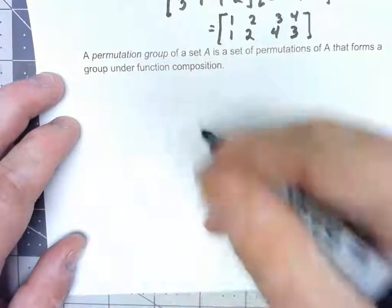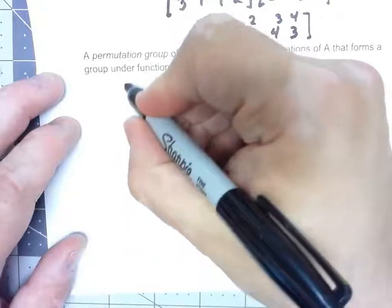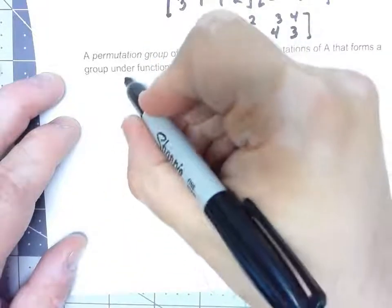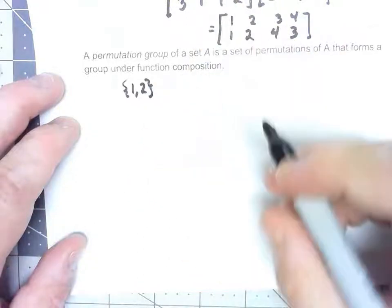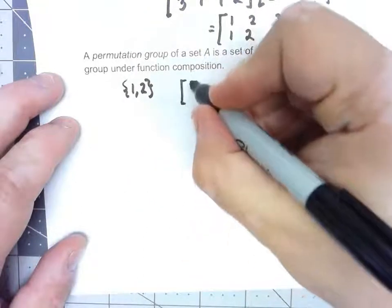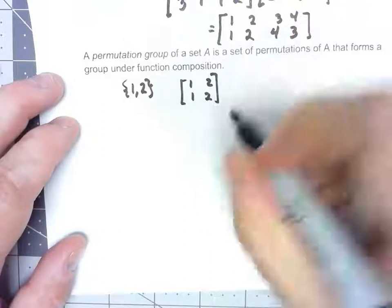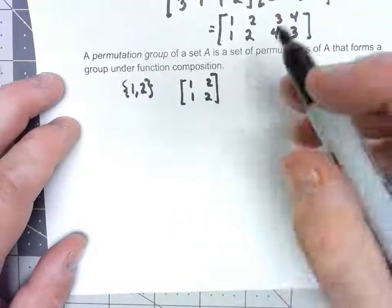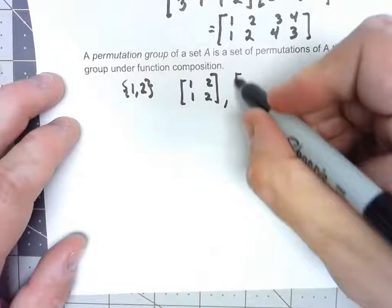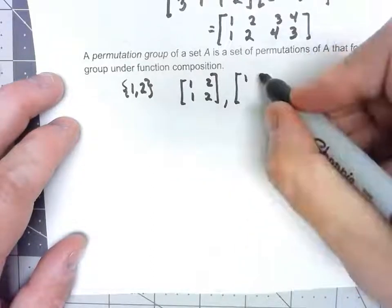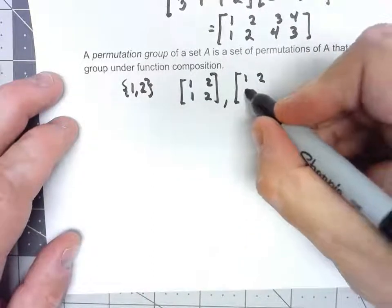So a really simple permutation group would be something like, if my set is just {1, 2}, I could have the permutations [1, 2; 1, 2], because we need an identity element, and then we would have the only other possibility, [1, 2; 2, 1].